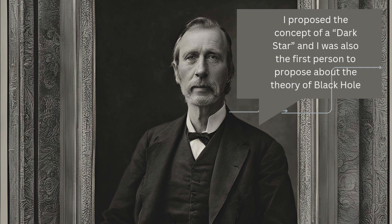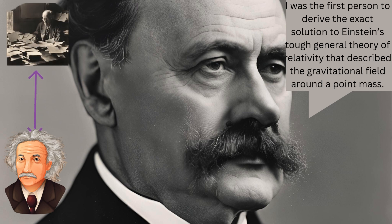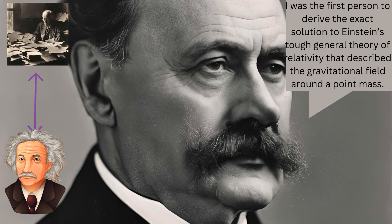Early theories were proposed by John Michell on the history of black holes. The concept of a dark star — a star with gravity so strong that light can't escape — was proposed by British scientist John Michell in the 18th century. This was followed by Karl Schwarzschild in 1916, a German physicist who derived the first exact solution to Einstein's general theory of relativity describing the gravitational field around a point mass. This solution implied the existence of black holes, which was then called the Schwarzschild radius.